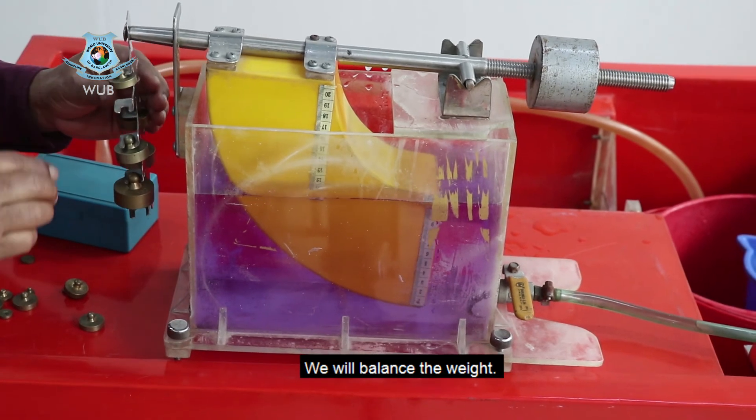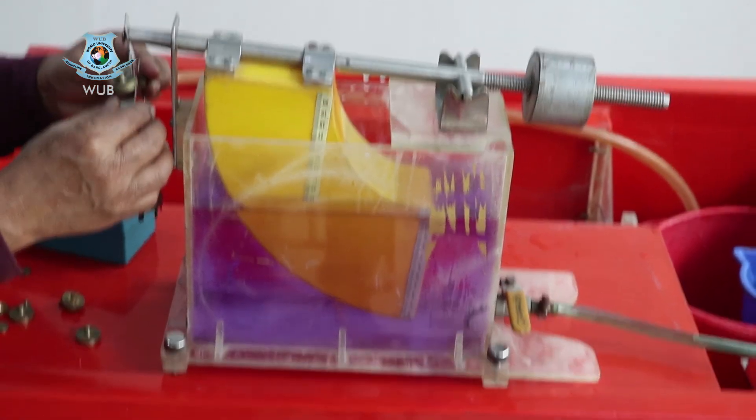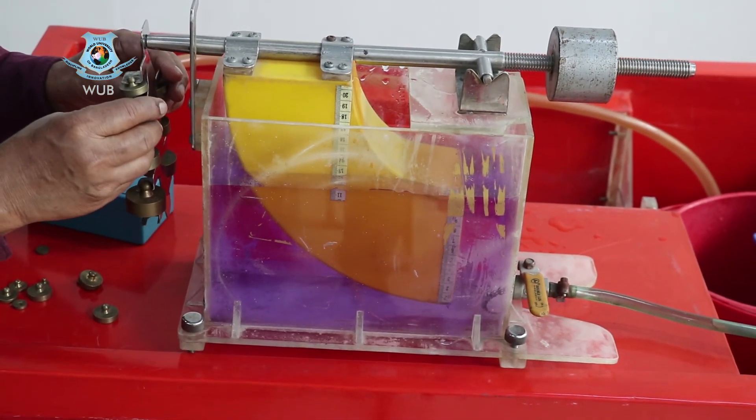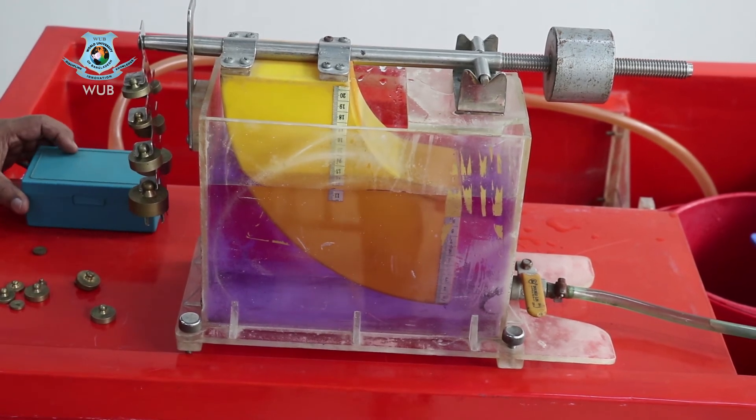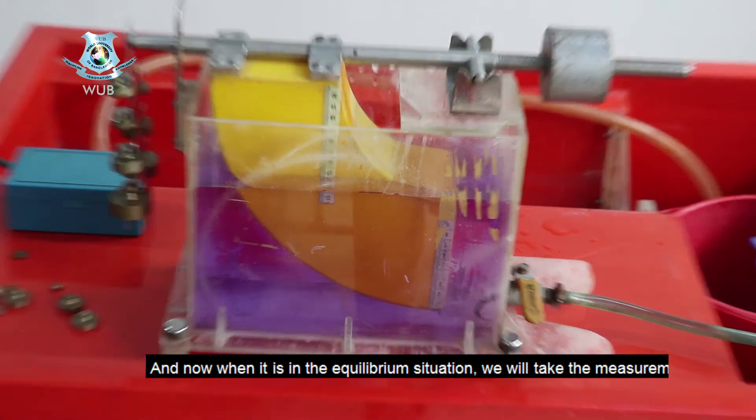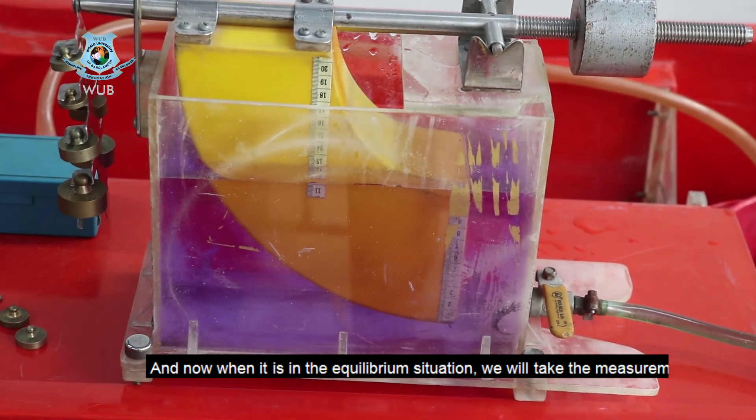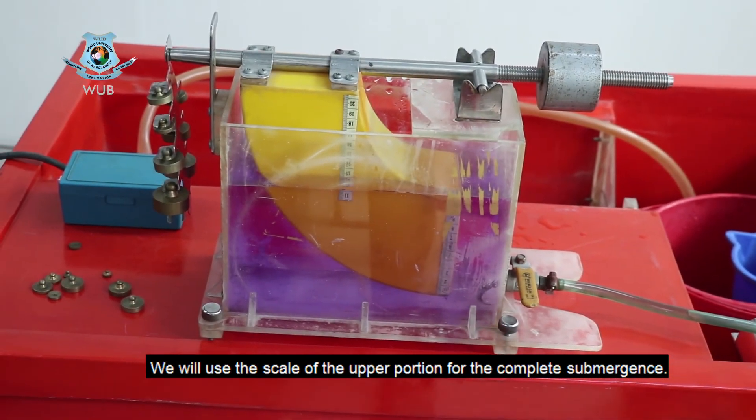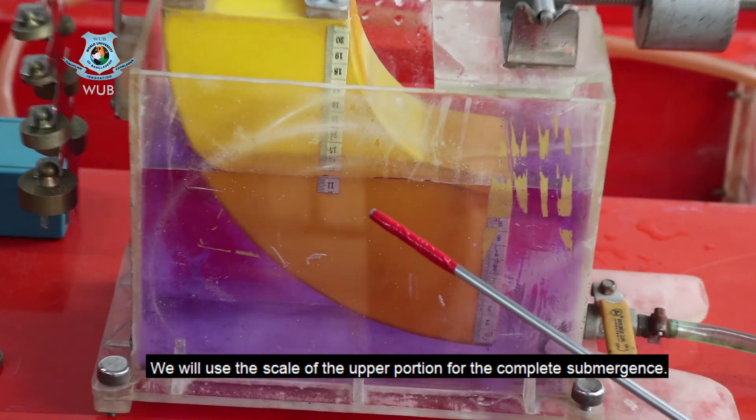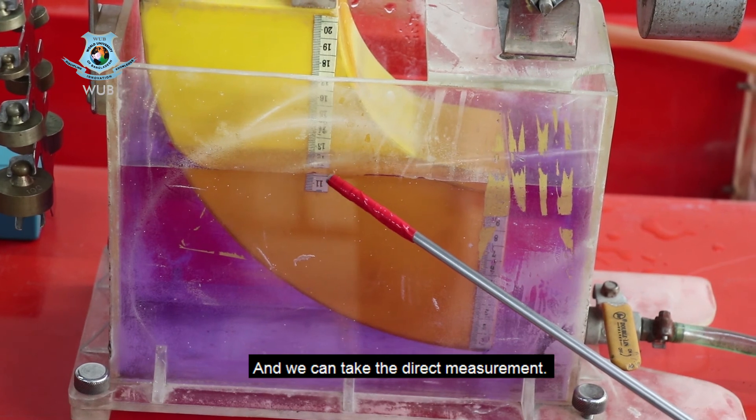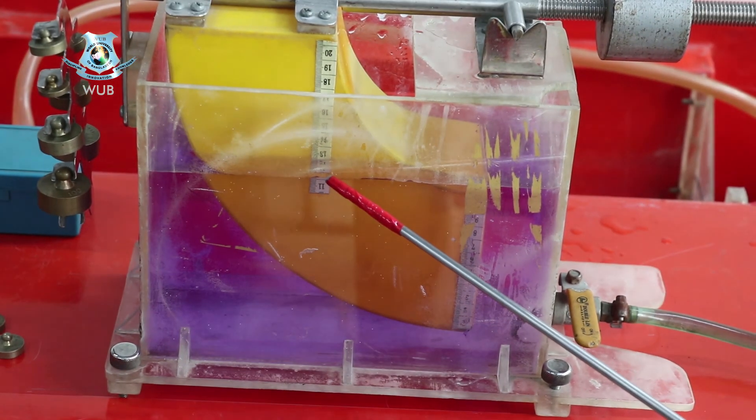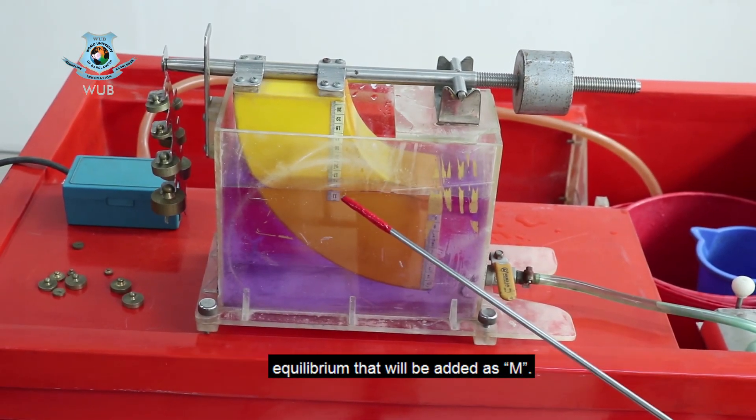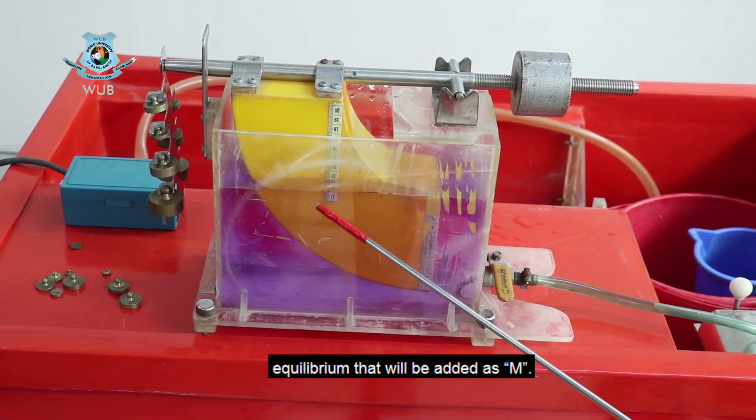We will balance the weight. And now when it is in the equilibrium situation we will take the measurement of Y2. We will use the scale in the upper portion for the complete submergence and we can take the direct measurement. From the equation we will calculate Y1 and the weight we used for equilibrium that will be added as capital M.